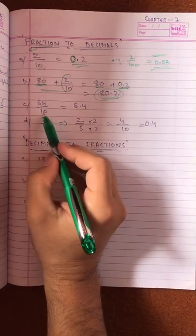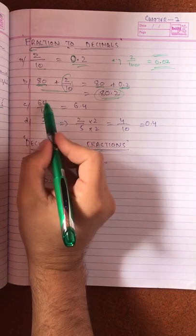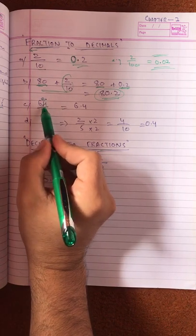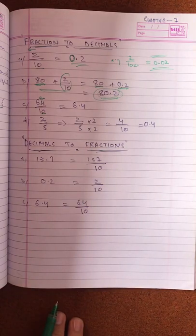Similarly, we have 64 by 10. It's simple. The decimal is one step left. This is one step, so it will become 6.4.